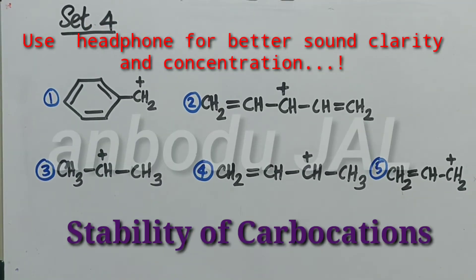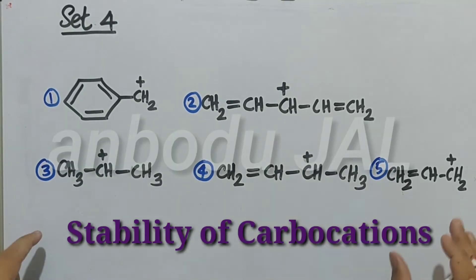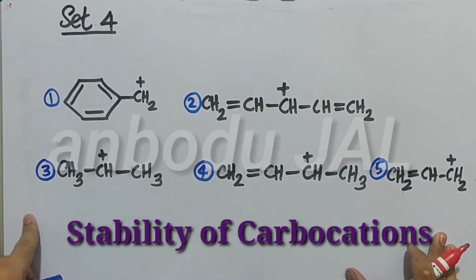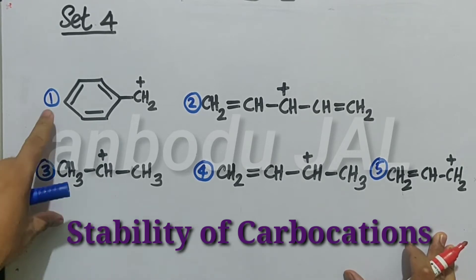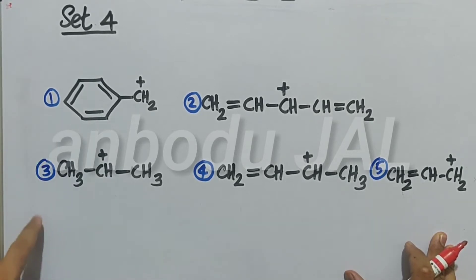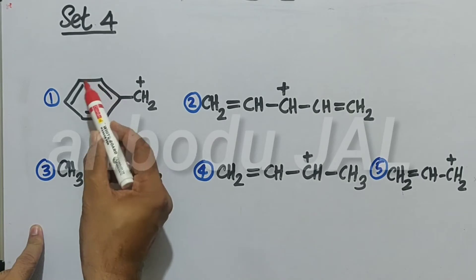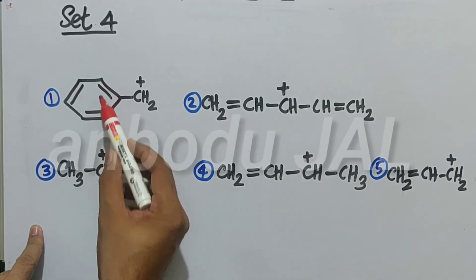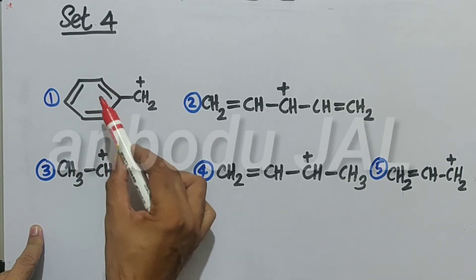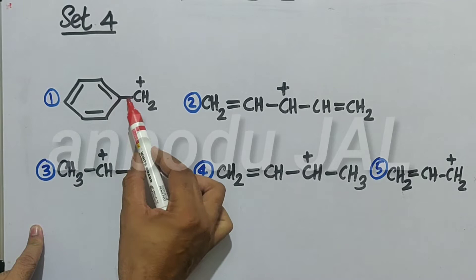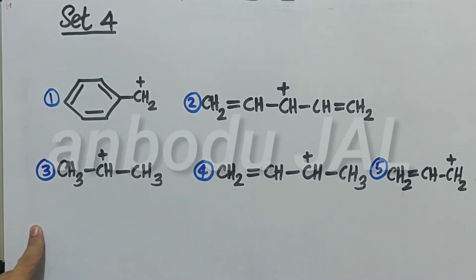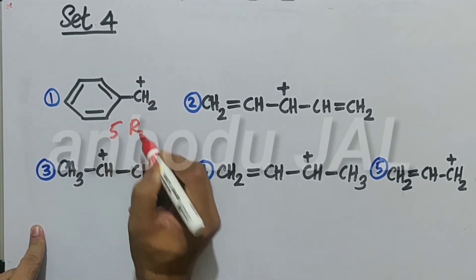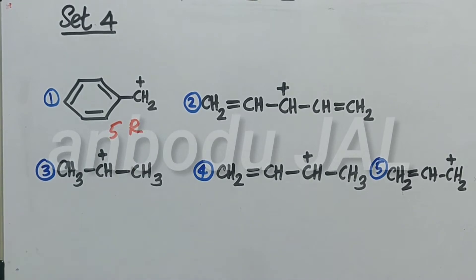In this set, we can analyze these five carbocations. The first one is benzyl carbocation, with alternating double and single bonds. Five resonance structures are possible in this case.